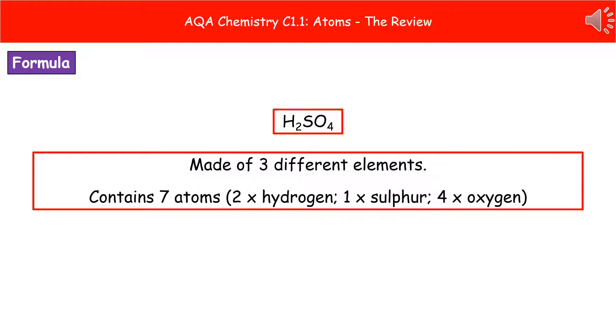So if we have a look at the example I've given you here of H2SO4, then just by looking at that formula without knowing anything else about it, we can see it's made up of three different elements because there are three different capital letters there.